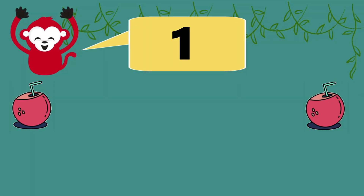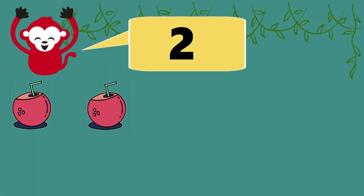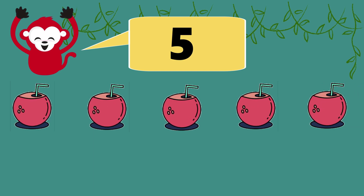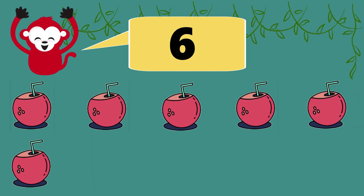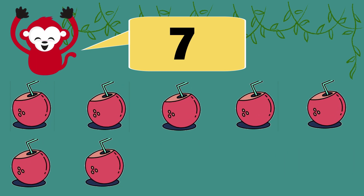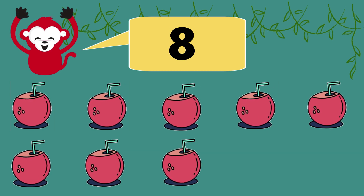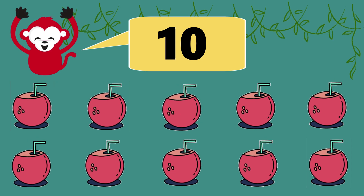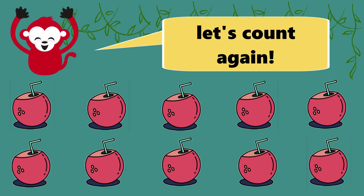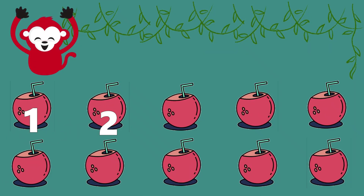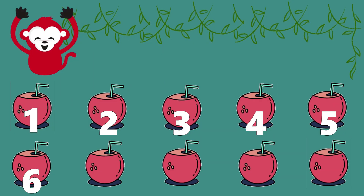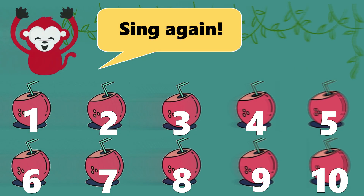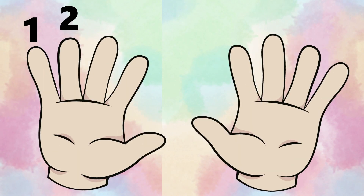1, 2, 3, 4, 5, 6, 7, 8, 9, 10. Come on now, let's count again. 1, 2, 3, 4, 5, 6, 7, 8, 9, 10. Sing again: 1 little, 2 little, 3...